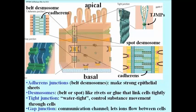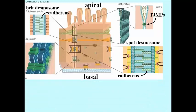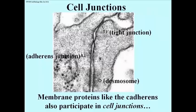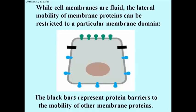The gap junction is really less a junction than a communication channel, and it allows ion flow between the cells. These junctions were originally identified by their structures, suggested by this electron micrograph, which shows three different kinds. We know that all membranes, including the cell membrane, are a fluid mosaic, which allows lateral movement of components, including proteins, shown here as green and blue things. But cells can, in fact, restrict the mobility of proteins by synthesizing and putting into their membranes barrier proteins and barrier molecules.